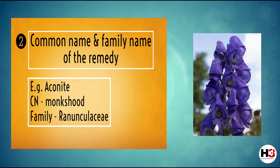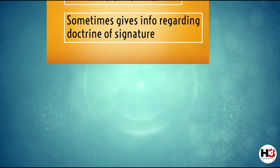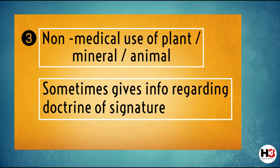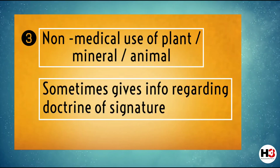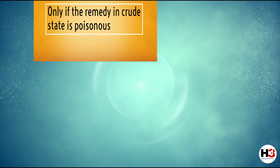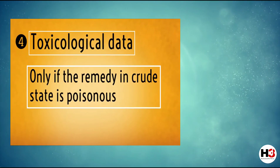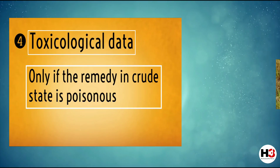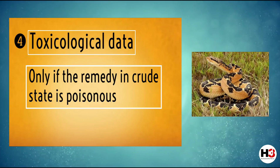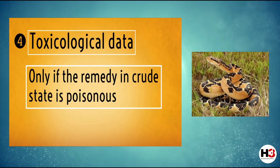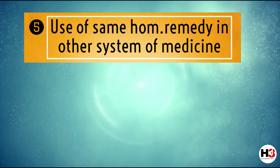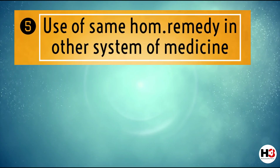Knowing the family helps you understand the newer or contemporary understanding of the remedy. The next point to study is the non-medical use of that particular plant, mineral, or animal. This just has to be referred to and not memorized, as it will sometimes give you information about the doctrine of signature of that remedy. Also, if a particular remedy is a poisonous substance in its crude state — for example, Lachesis poison — it is very important to understand the basics of the toxicological action and the organs upon which it acts, as that will help us understand the spheres of action of this remedy when it is potentized.